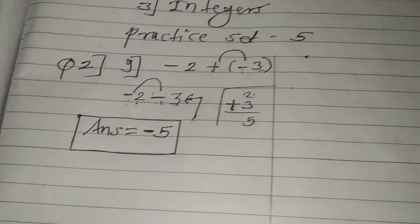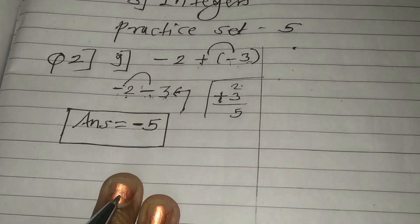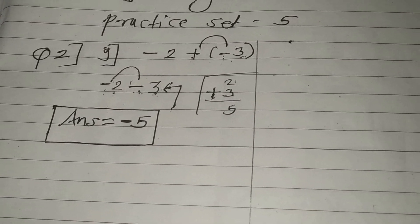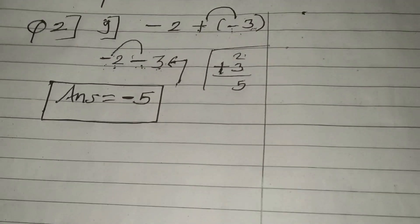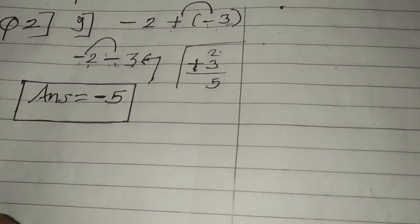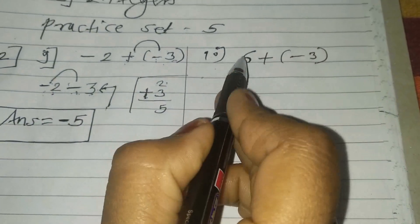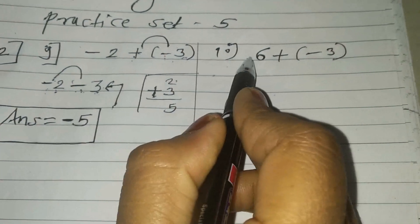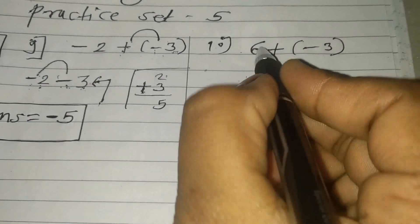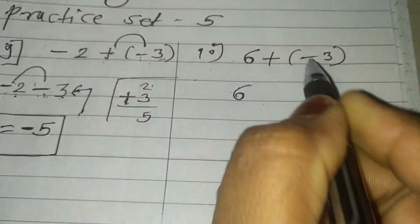I hope you understand this question. Now see problem number 10. 1st number is 6, plus minus 3. When the 1st number is positive, no need to give that sign. So take the number as it is down. Now reduction of sign here.